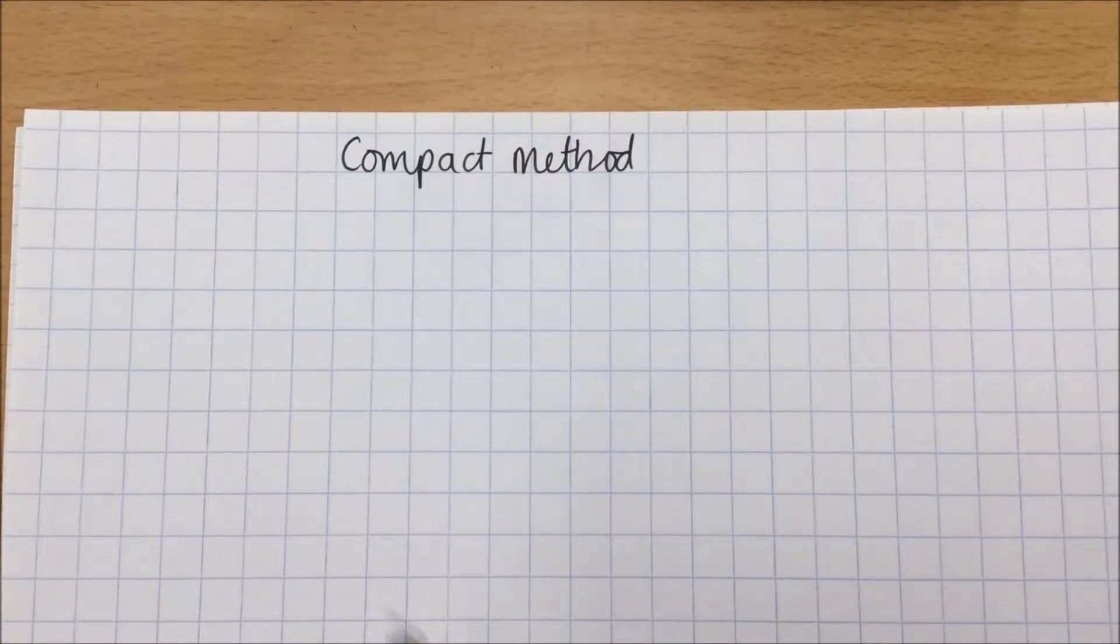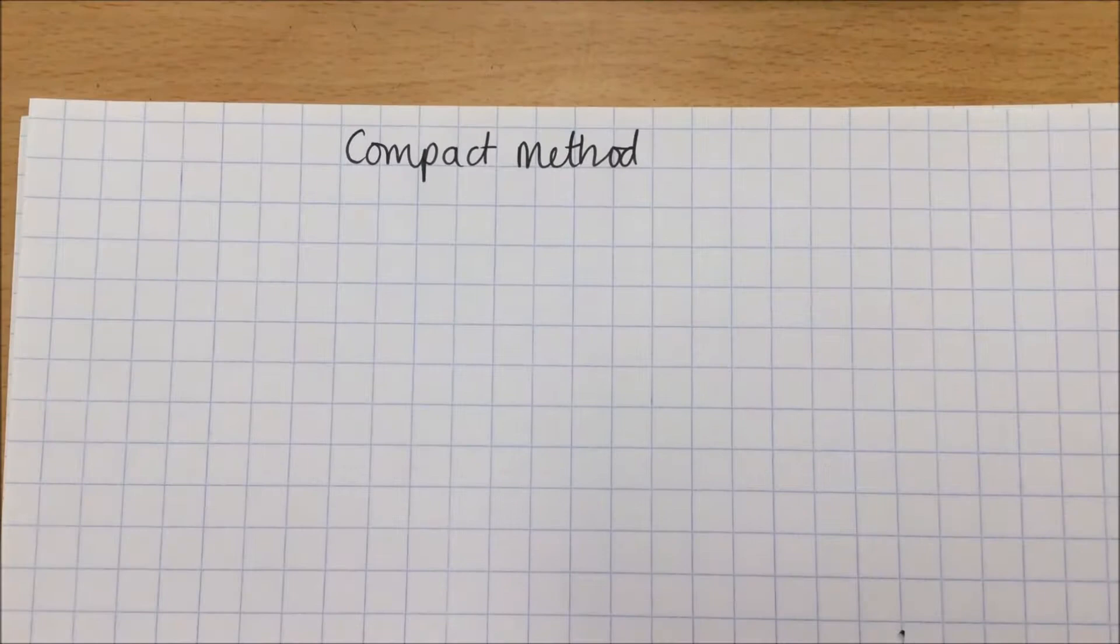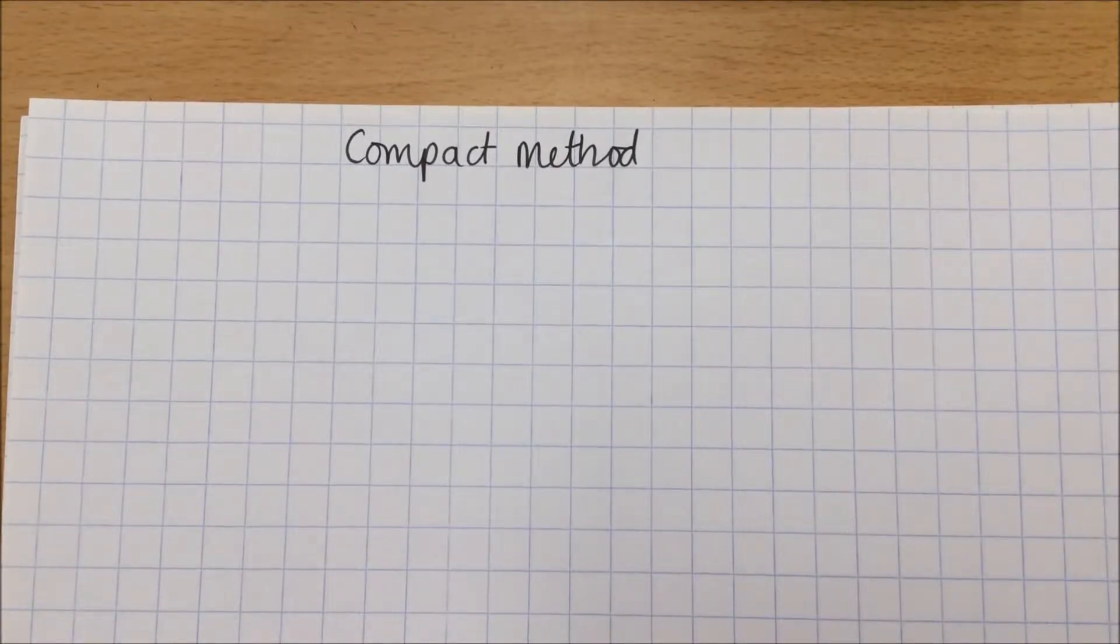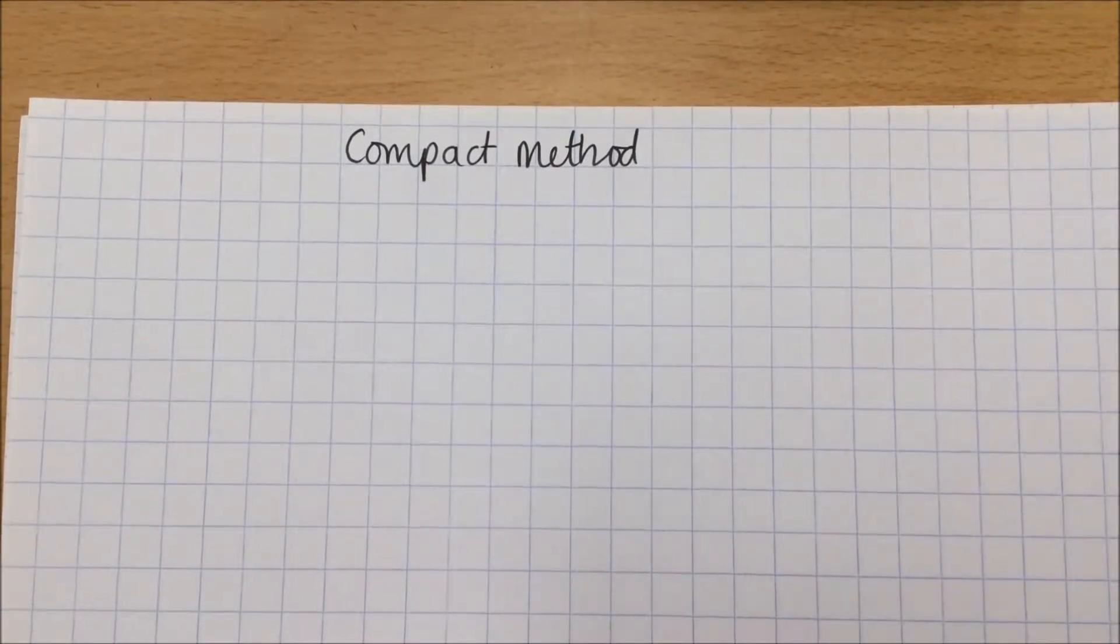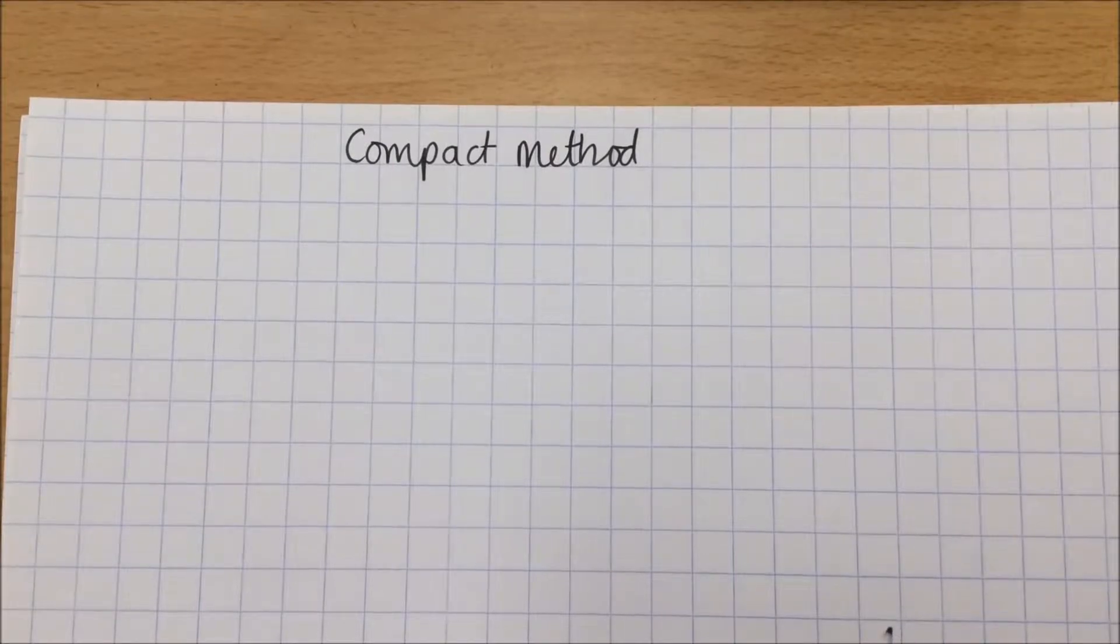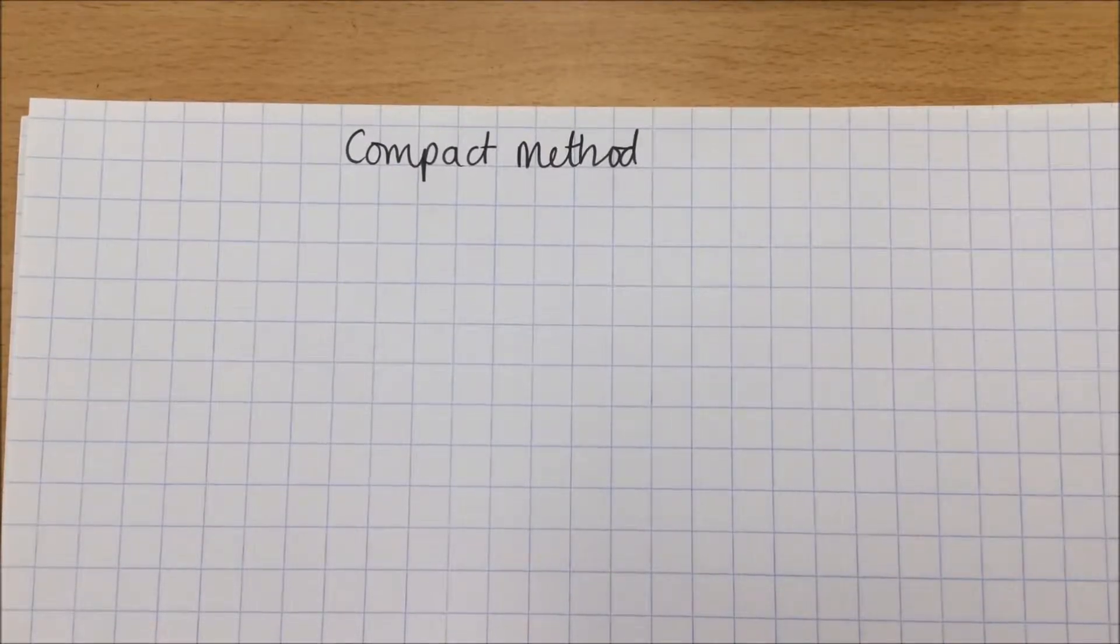I'm now going to show you how to multiply using the compact method. This is the most efficient way, the quickest way of calculating using multiplication, and we would therefore encourage year sixes by the end of year six to be confident with this.